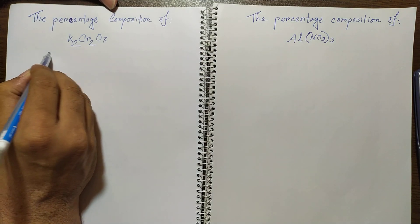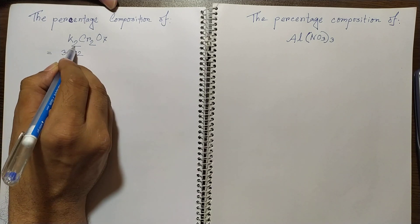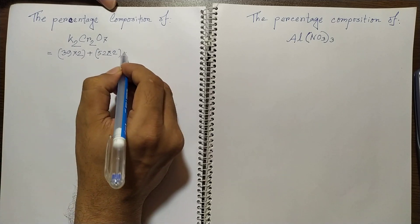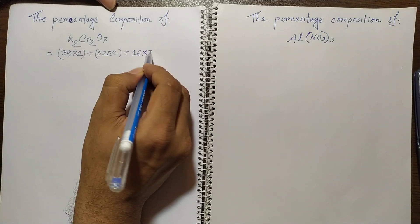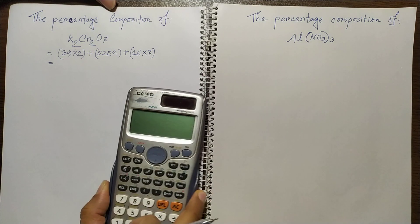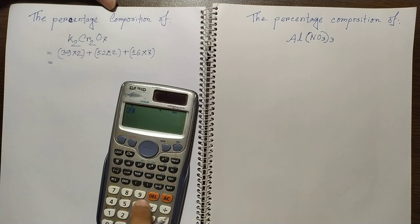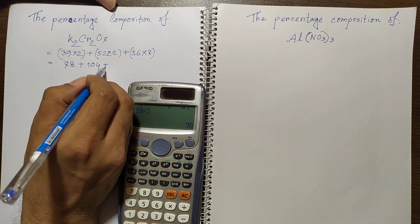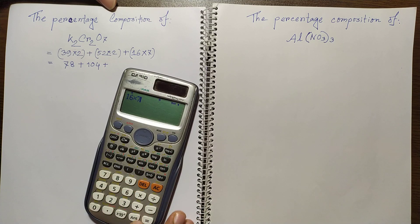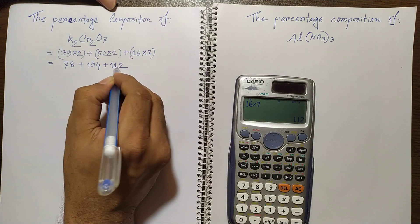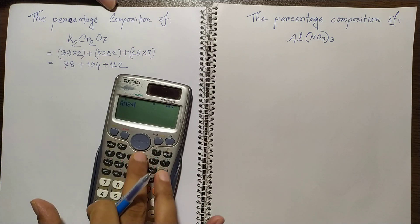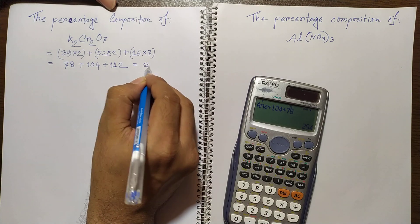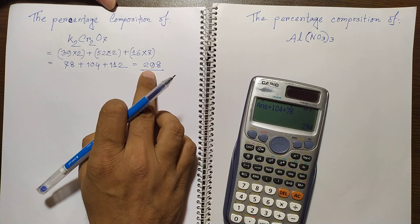For potassium dichromate: potassium is 39 times 2 atoms, chromium is 52 times 2 atoms, and oxygen is 16 times 7 atoms. So 39 × 2 = 78, plus 52 × 2 = 104, plus 16 × 7 = 112. The total — 78 + 104 + 112 — gives a relative molecular mass of 298 for potassium dichromate.